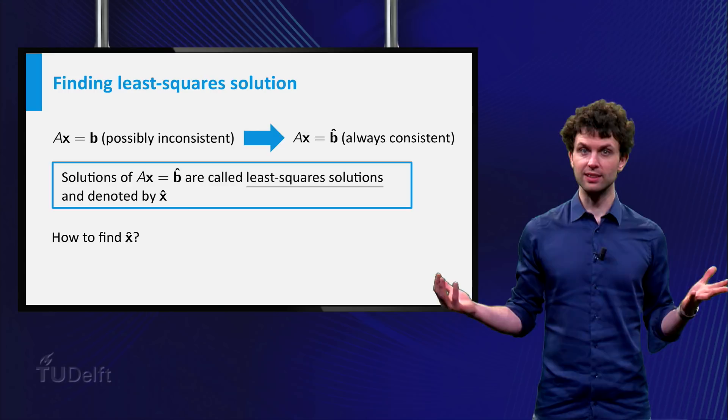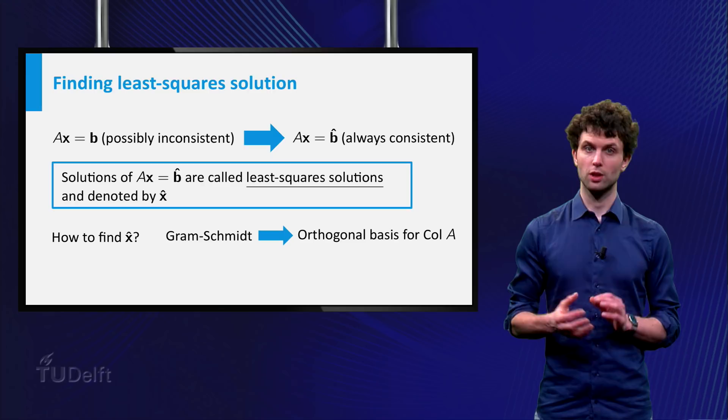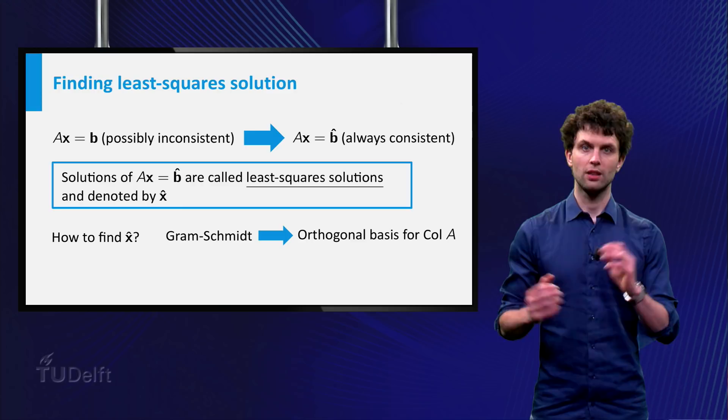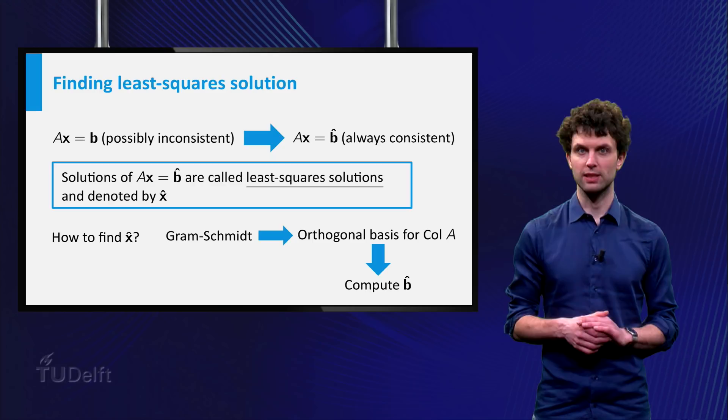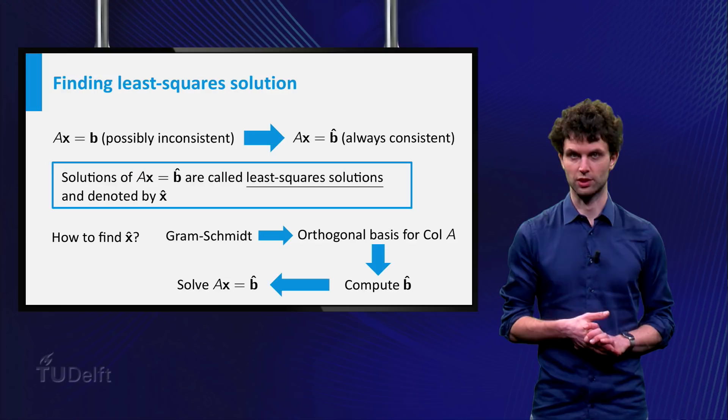The remaining question is, how do we compute x̂? Well, using the knowledge you have obtained in the previous lectures, you can solve this problem. You could construct an orthogonal basis of the column space of A, and then compute the orthogonal projection b̂ of the vector b on the column space of A. Once you have computed b̂, you could of course solve the consistent system Ax = b̂ by means of the method of row reduction.